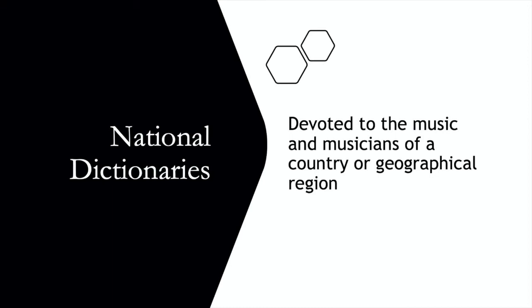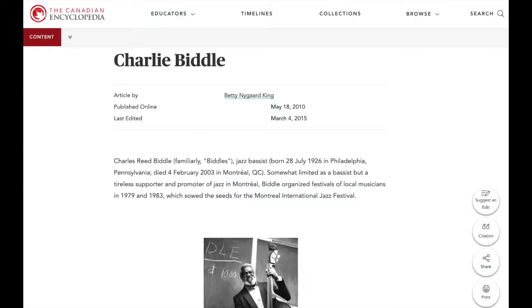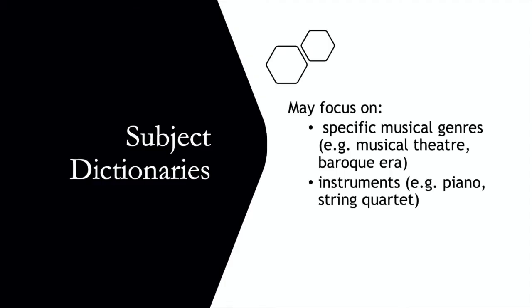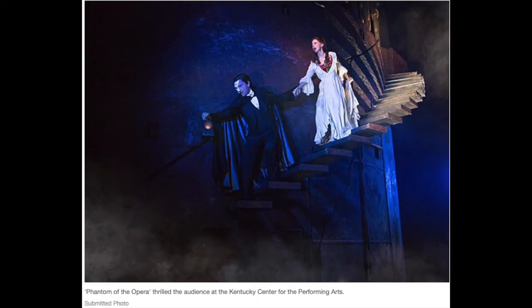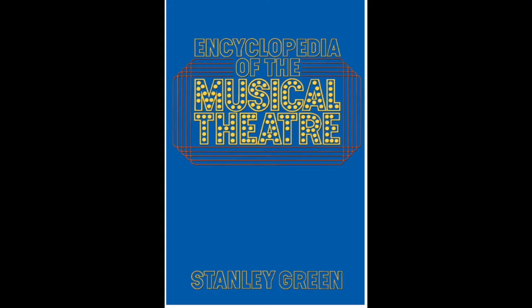If you were researching the Montreal jazz musician Charles Reed Biddle, you won't find an entry in Grove Music at all. However, the Canadian Encyclopedia has an entry with a short biography, a discography, and a bibliography with further reading. Subject dictionaries cover musical genres and instruments and are great for looking at musical terms related to a specific genre. For example, you might want to learn more about the song The Angel of Music from the musical Phantom of the Opera by Andrew Lloyd Webber. Grove Music has a good entry on the composer Andrew Lloyd Webber, but it doesn't have a specific entry on Phantom of the Opera, so you might want to check a musical theatre dictionary or encyclopedia for more detail.